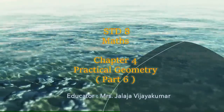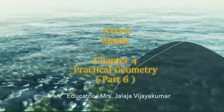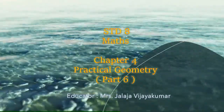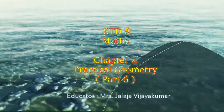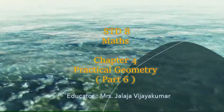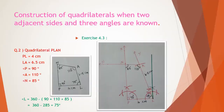Hello children. Let us continue chapter 4 practical geometry, exercise 4.3. Construction of quadrilaterals when two adjacent sides and three angles are known. Today we do question number 2; question number 1 we already did in the last class.